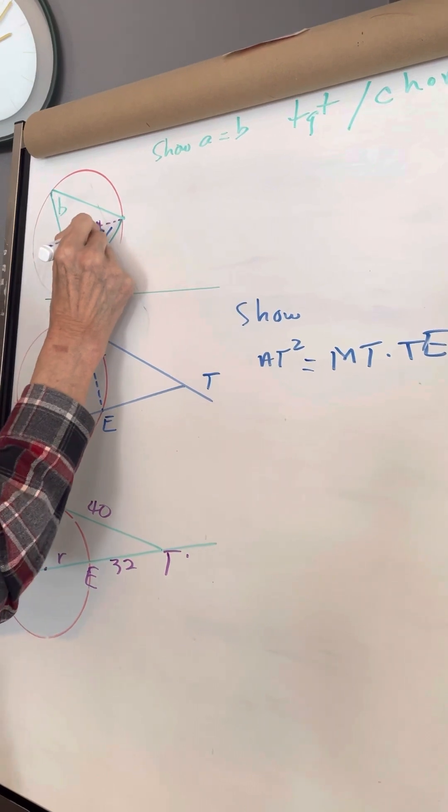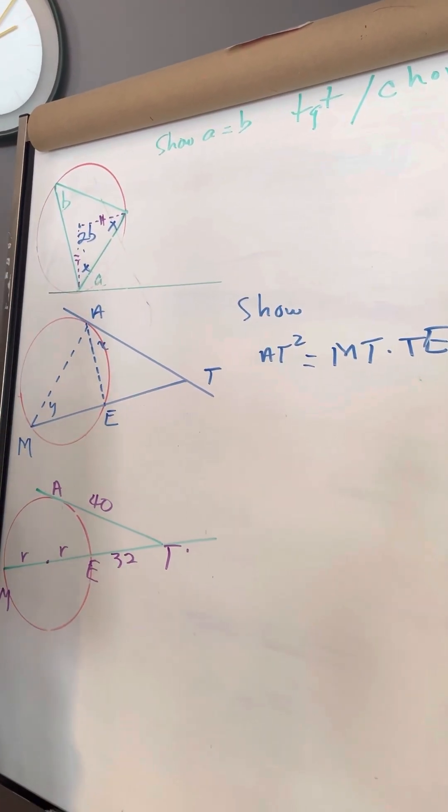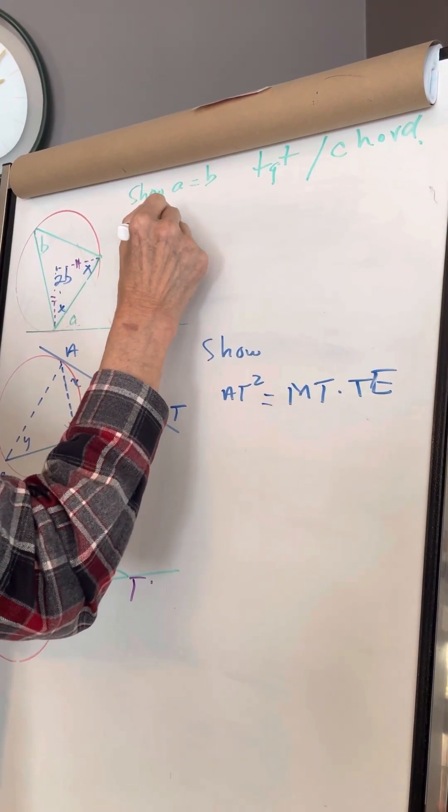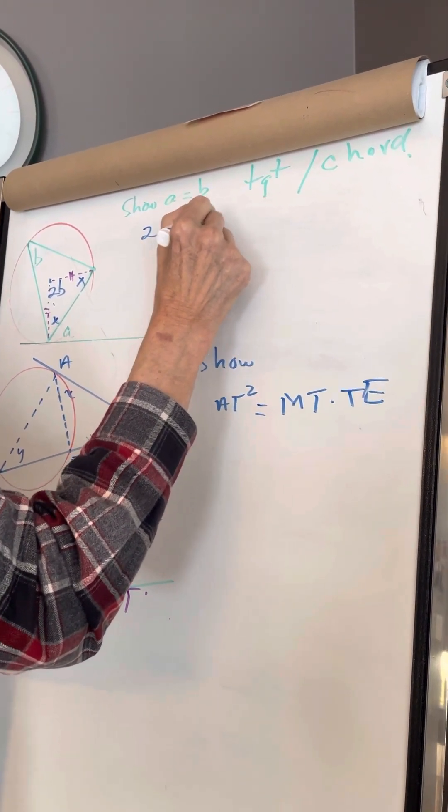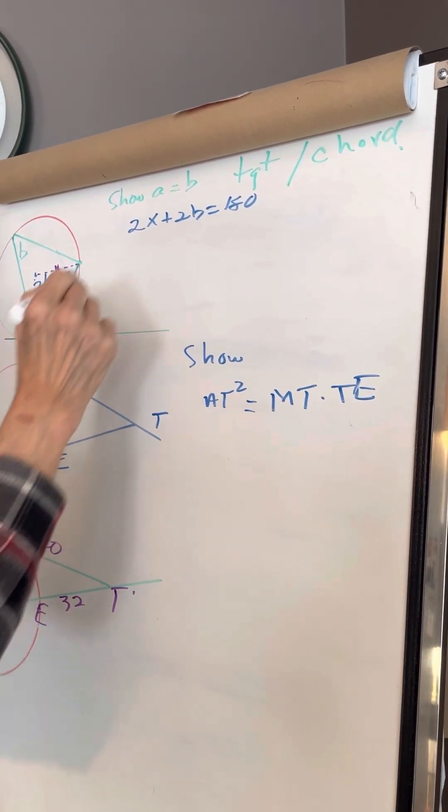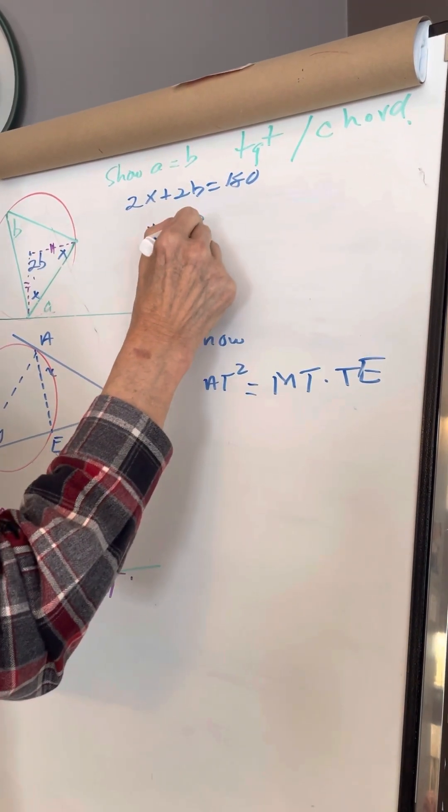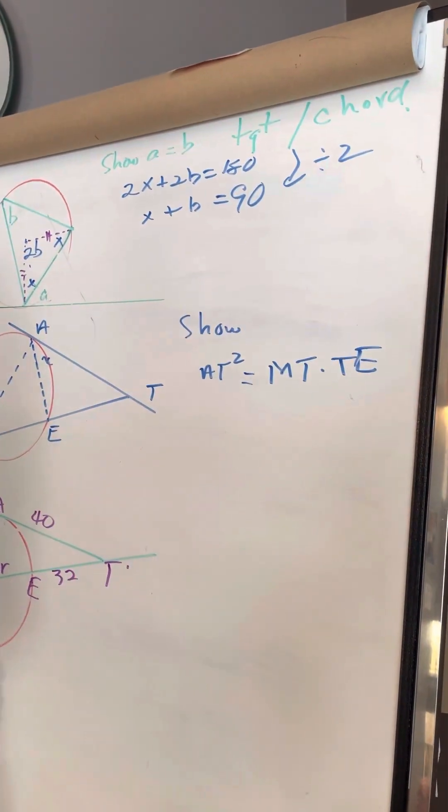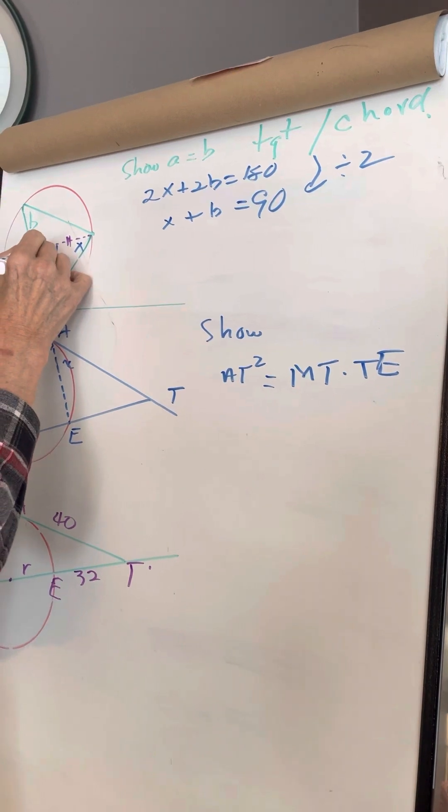So that means 2x + 2b = 180 for the triangle, so x + b = 90 because I divided by 2. But we also know that the radius is at right angles to the tangent line, therefore x + a is also 90.